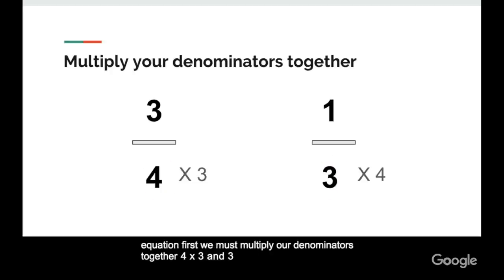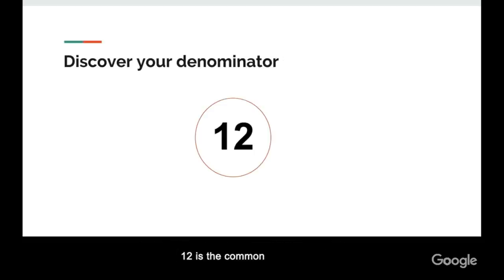4 times 3 and 3 times 4 equals 12. 12 is the common denominator. Captions are also a great way to support English as a New Language learners, as well as any viewer who wants to follow along or watch when sound isn't an option.